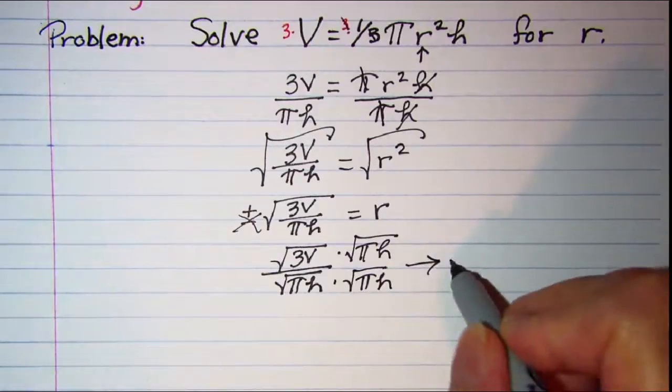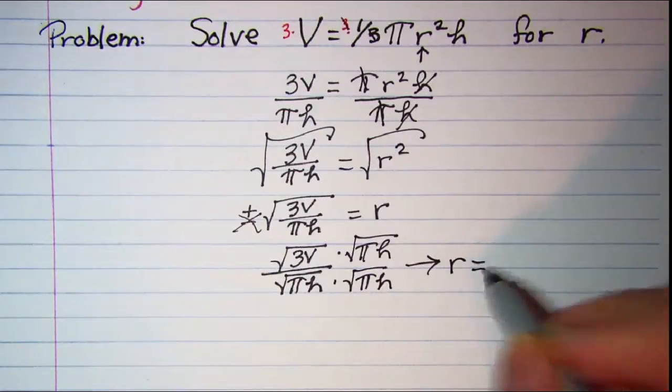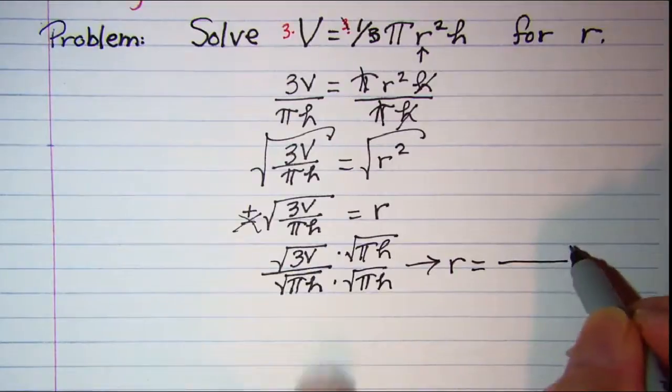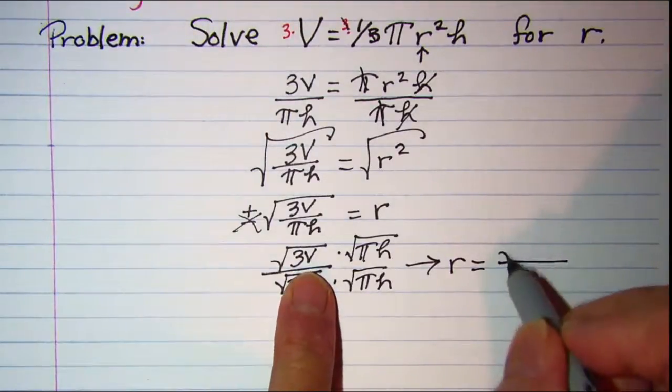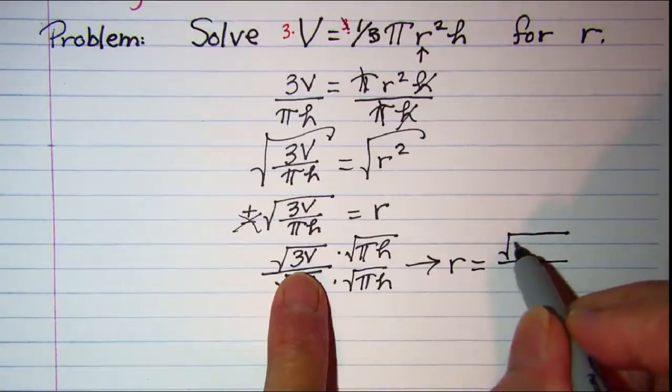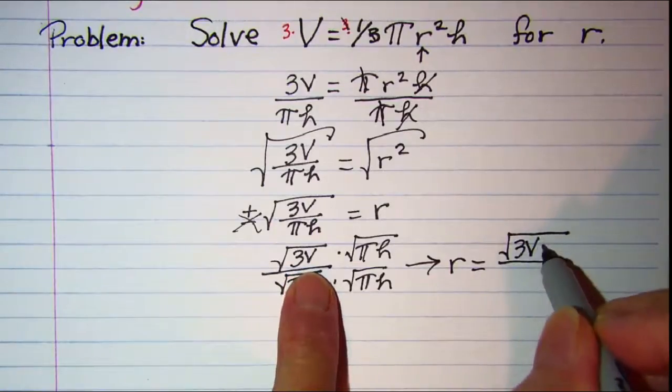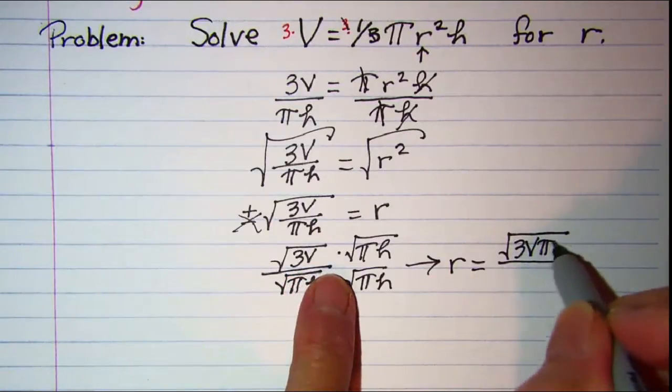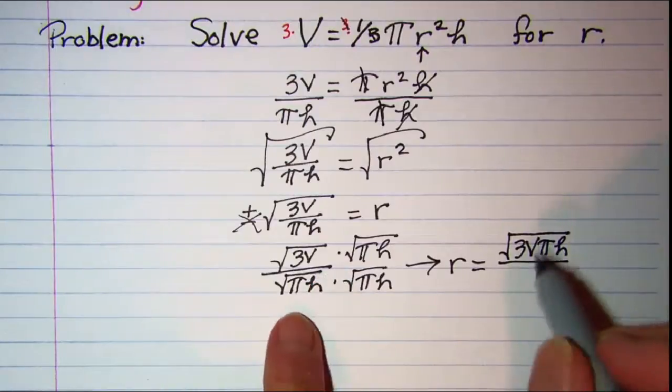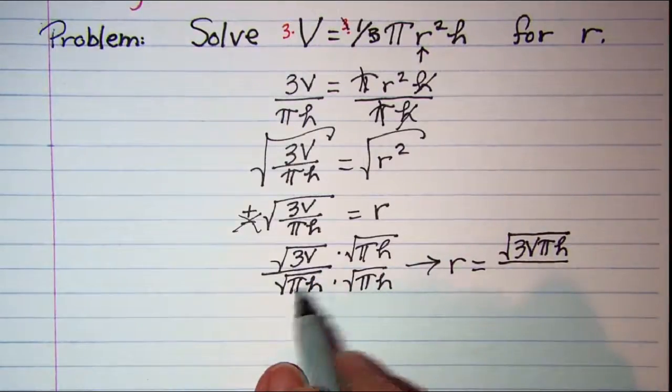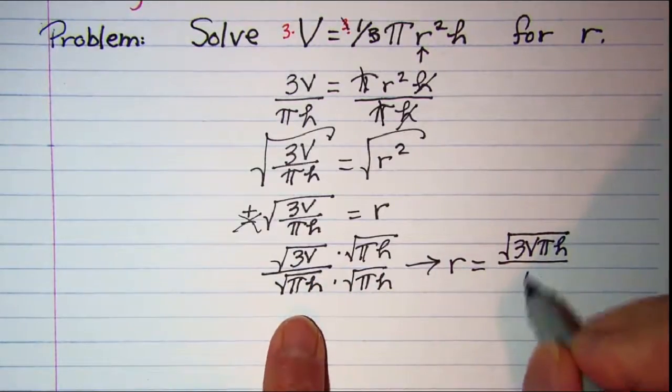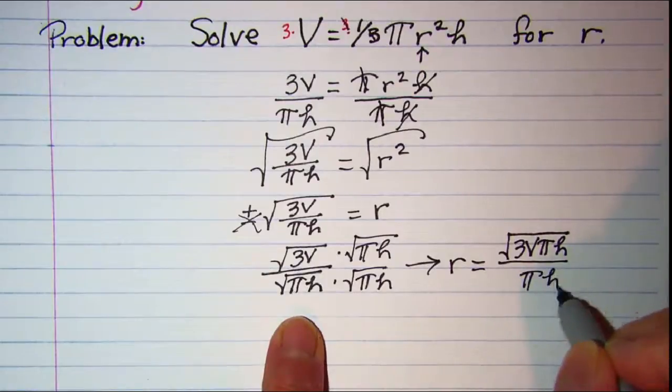This gives me r is equal to the square root of 3V pi h over, and then the square root times itself will just give me pi h in the denominator.